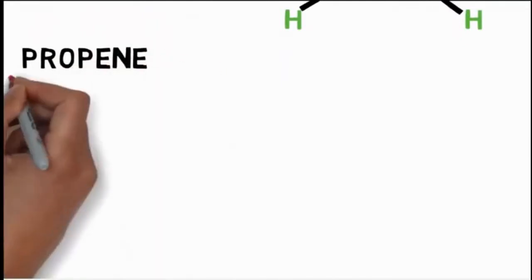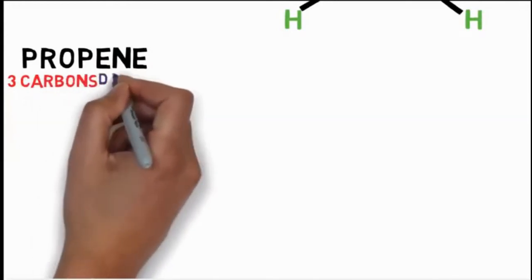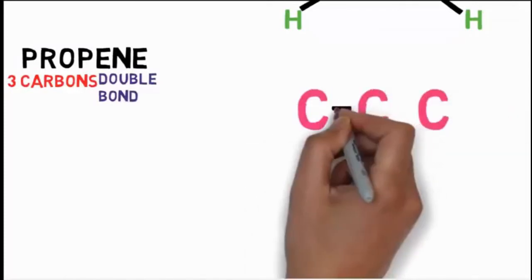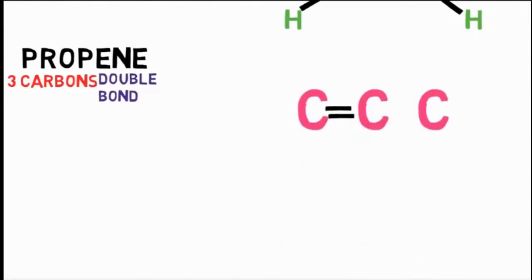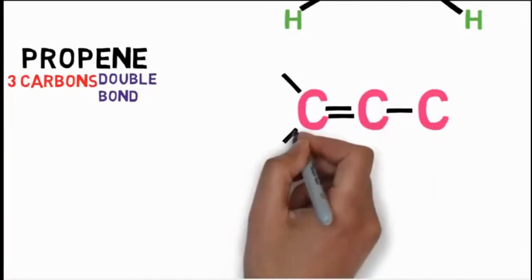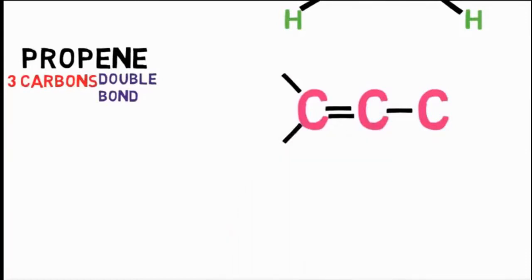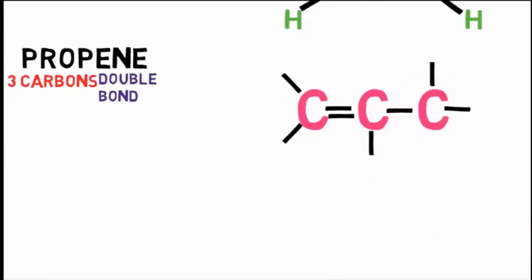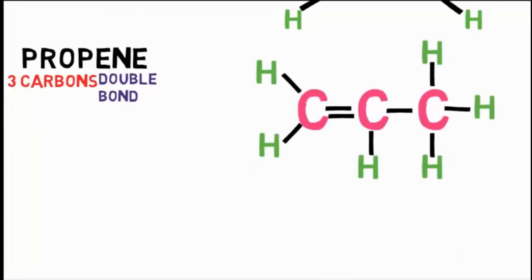Propene: it has prefix 'prop' meaning three carbons and 'ene' meaning carbon-carbon double bond on any pair. Insert single bonds between each remaining carbon pair. The first carbon has two bonds — add two more; the next carbon has three bonds — one remains; the last carbon has one bond — add three more. Add hydrogen to each bond. This is our propene ready.